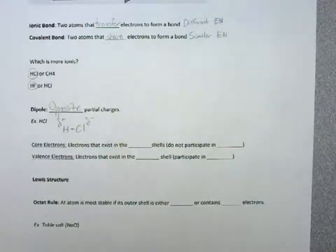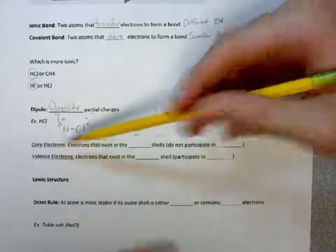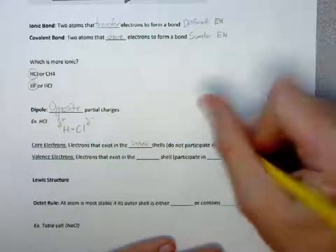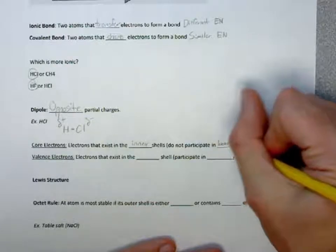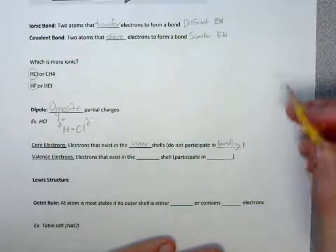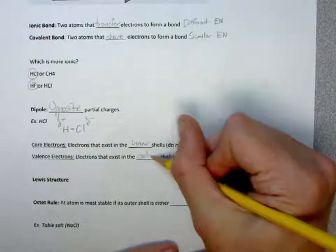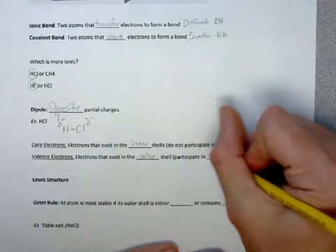You might ask, which electrons participate in bonding? Well, we have core electrons, which are the inner shells, that do not participate in forming bonds. And for valence electrons, they are going to exist in the outer shell and they do participate in bonding.